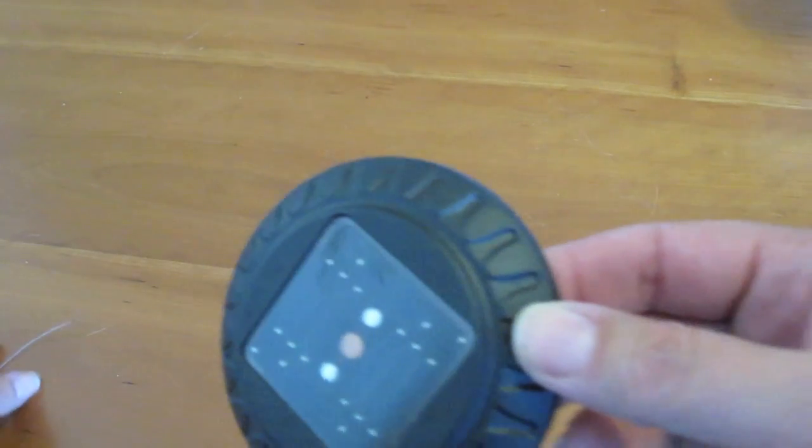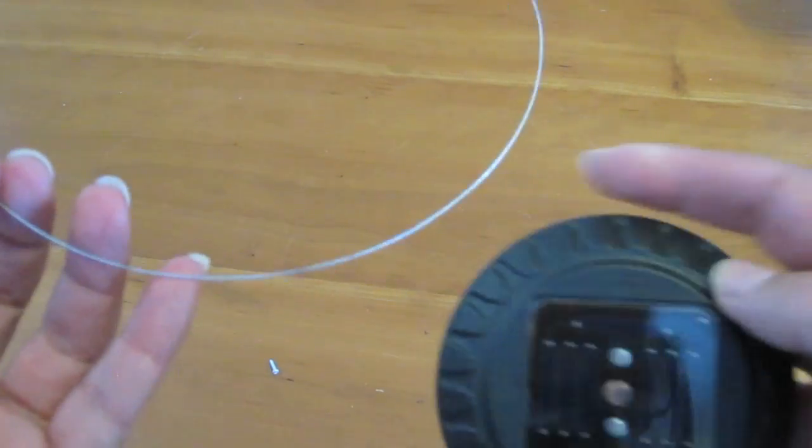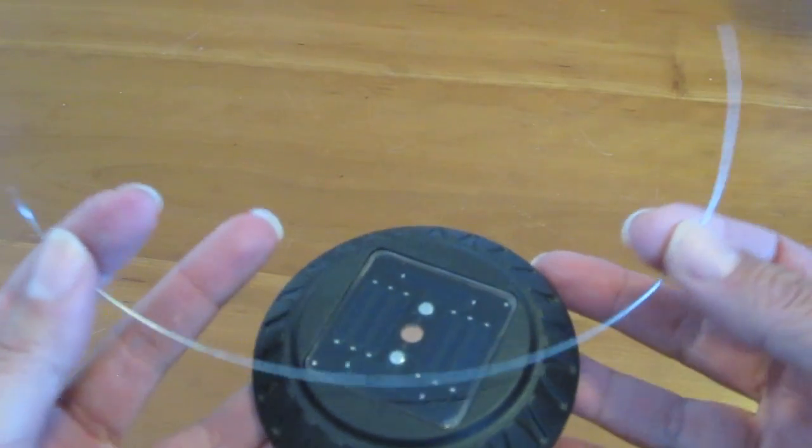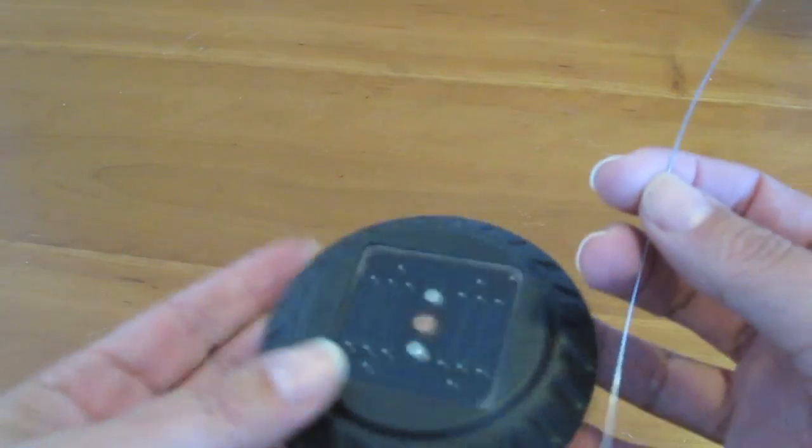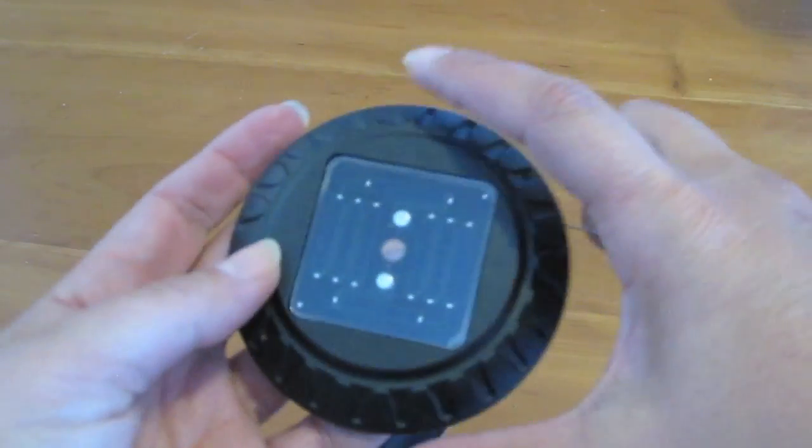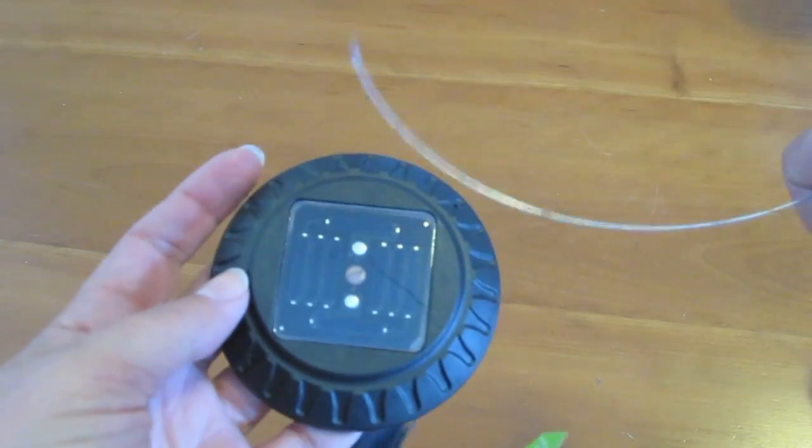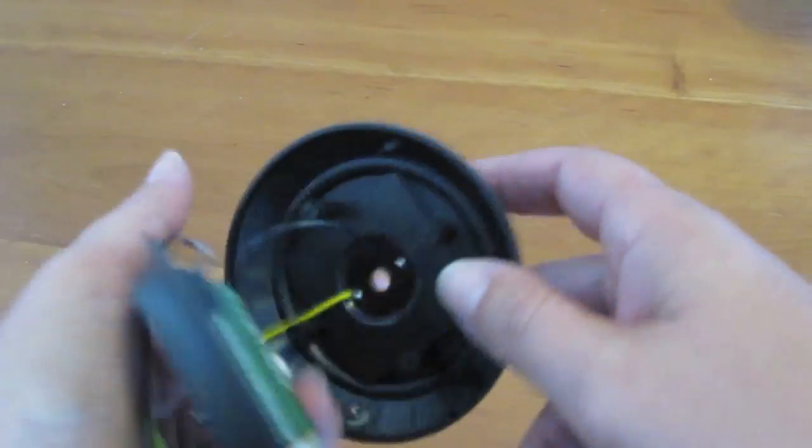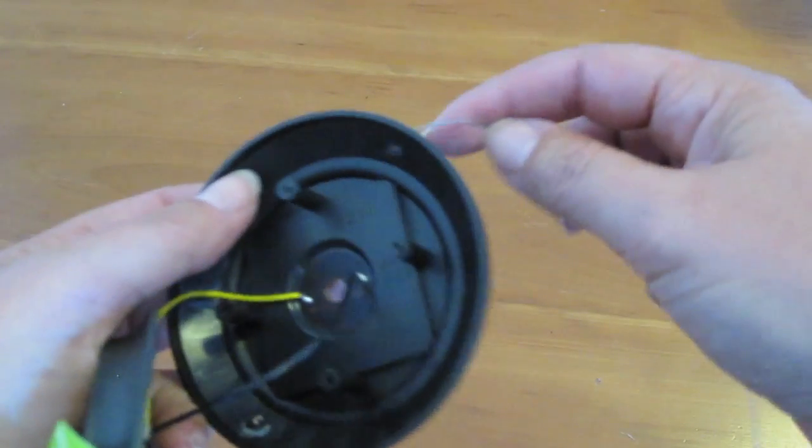Now what I've done is taken some of that picture hanger wire and I've cut a piece that's about nine inches or so, eight to nine inches. If you have a bigger lamp of course you're going to need more wire, so make sure you judge that accordingly.